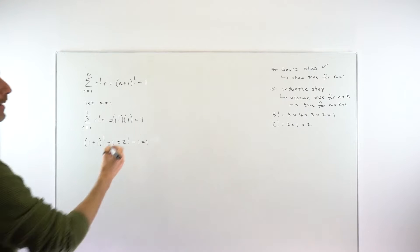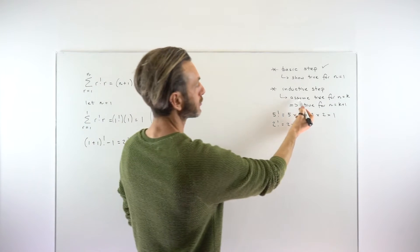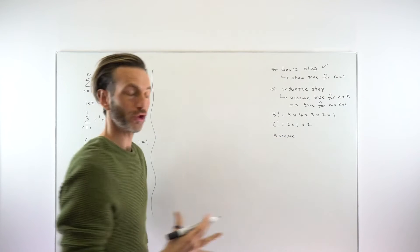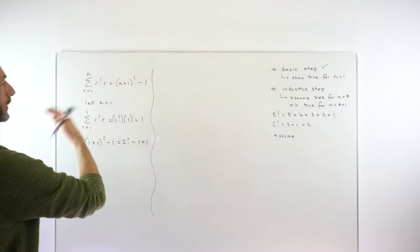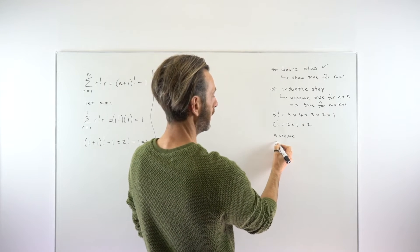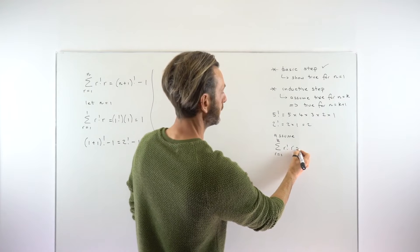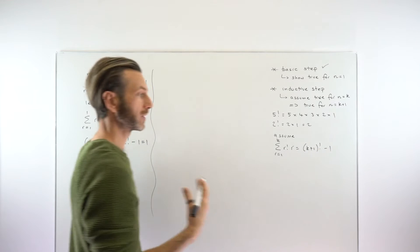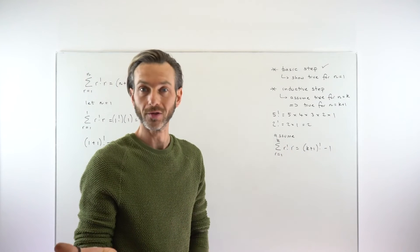Now the more challenging part is the inductive step. It's useful — not needed, but useful — to write out more fully what these are. We're going to assume that this result is true for the general case n equals k, which means just replacing the n's in the original formula with k. So we assume that the sum from r equals 1 up to k of r factorial times r is equal to k plus 1 factorial minus 1. That's our assumption, and we need to use it as part of the inductive step. If you find yourself doing one of these and you don't use your assumption, something's gone wrong.